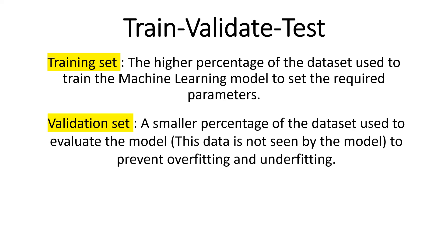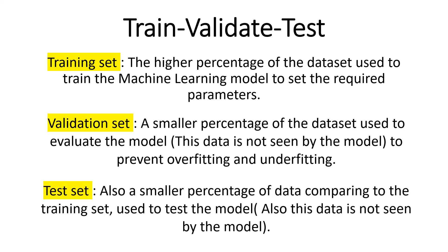The validation set is a smaller percentage of the dataset used to evaluate the model. This data is not seen by the model and is used generally to evaluate our model for preventing overfitting and underfitting. The test set is also a smaller percentage of data compared to the training set, used to test the model. This data is also not seen by the model.